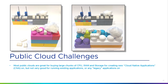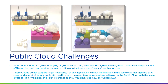Most public clouds are great for buying large chunks of CPU, RAM, and storage and creating brand new cloud-native applications, but they're not very good for running existing or legacy applications. In simple terms, there isn't an easy way of doing high availability and fault tolerance in the public cloud without rewriting your applications — something the VMware hypervisor can do on-premise and in cloud. Public clouds do not support high availability of any application without modification in the same way vSphere ESXi does, and most legacy applications would have to be rewritten or re-engineered to run in the public cloud with the same level of high availability and fault tolerance as they have natively on vSphere ESXi.